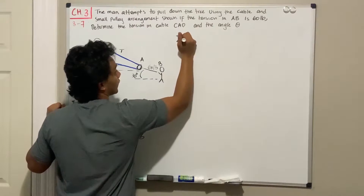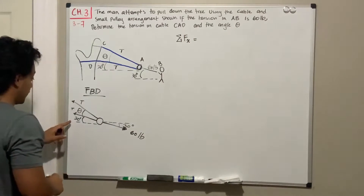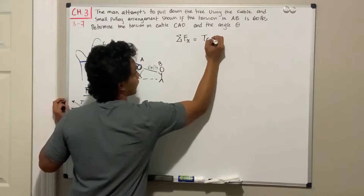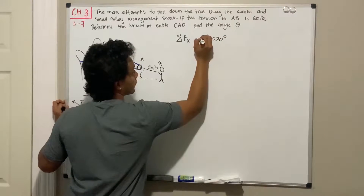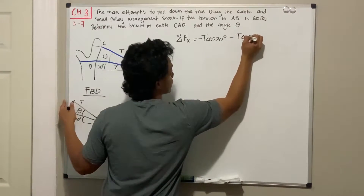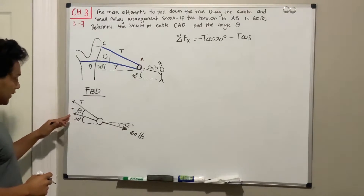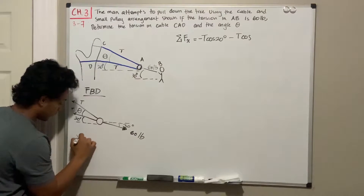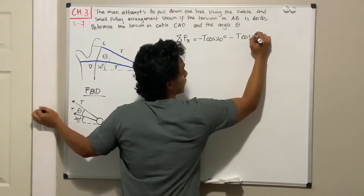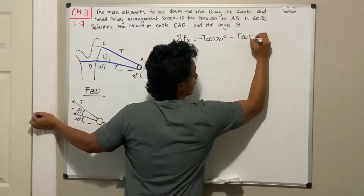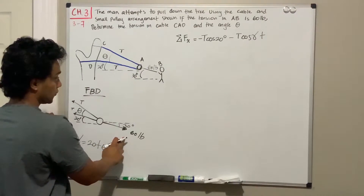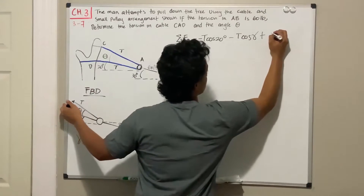Knowing this, we can apply our equations of equilibrium. For the sum of forces in the x-direction, we have negative T times cosine of 20 for the first tension — it's going to the left, so it's negative — minus the second tension multiplied by cosine of the angle. That angle is not theta but theta plus 20, so we create a variable gamma equal to 20 plus theta. Then plus 60 cosine of 30, and all this equals zero.